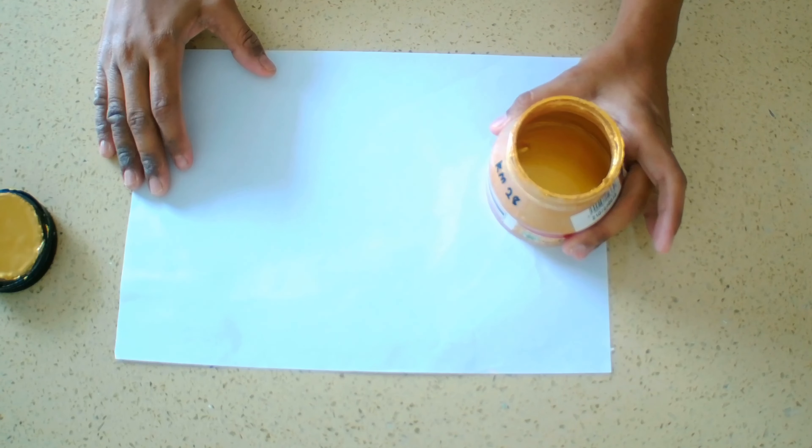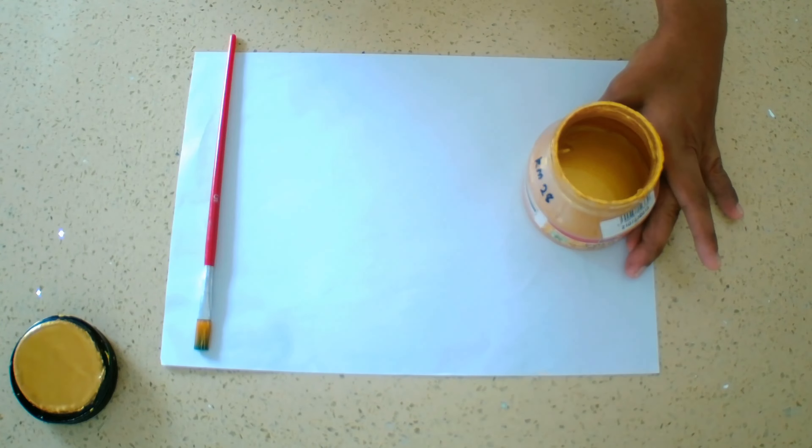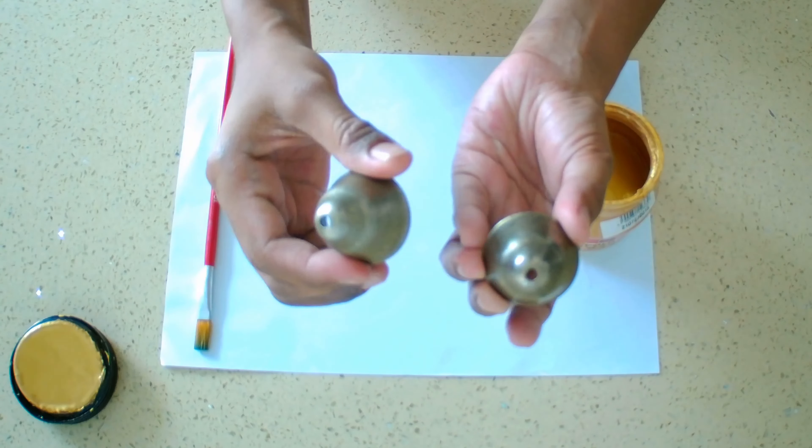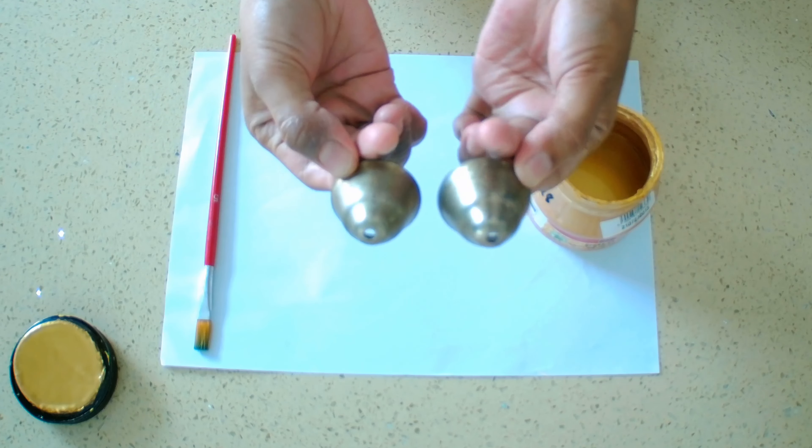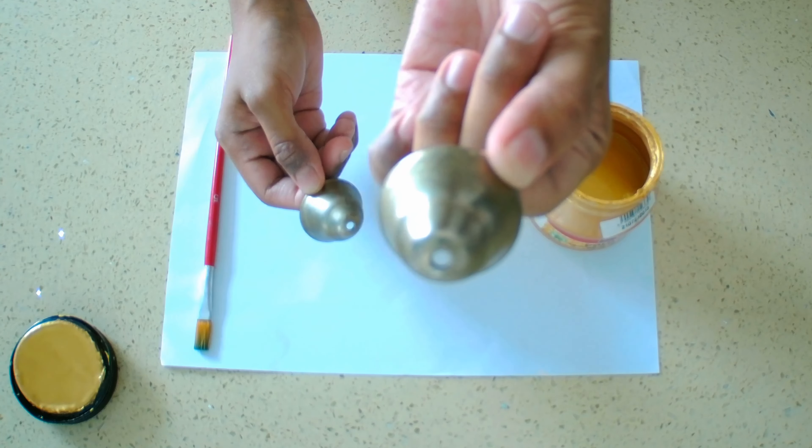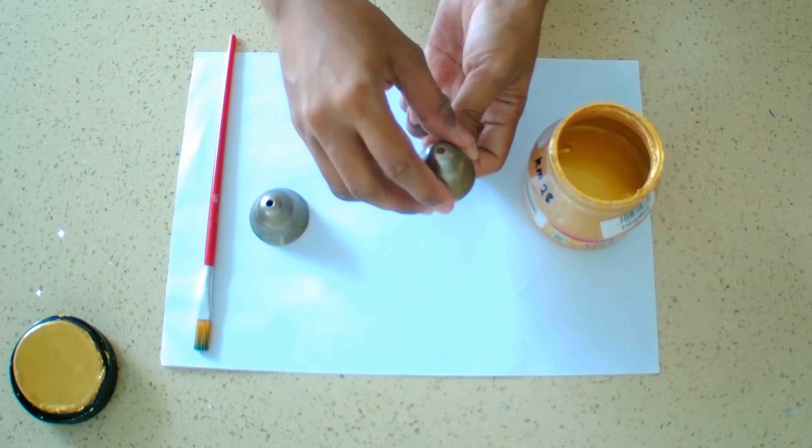I am going to use this gold paint to paint my small bells. So I need a paper to protect my table, then a paint brush. And this is the bell that I was mentioning about.